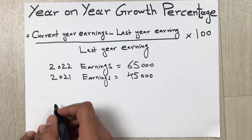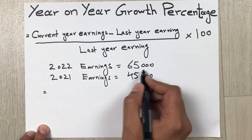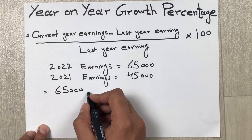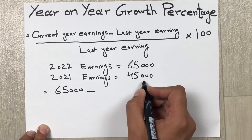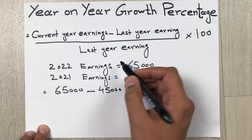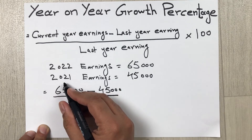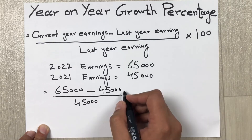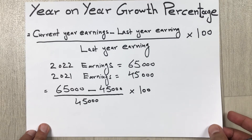Now we have the values, we will put them into the formula. Current year earnings are 65,000, minus last year earnings of 45,000, divided by last year earnings of 45,000, multiplied by 100.